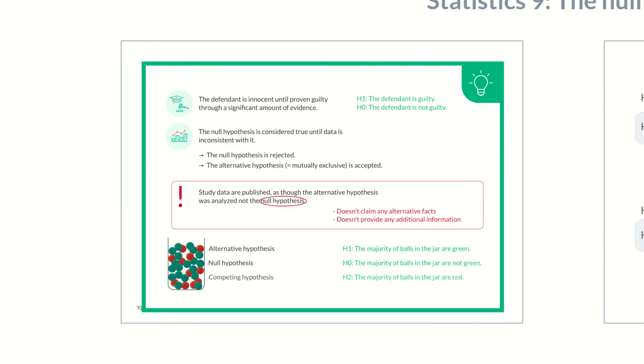The hypothesis, the majority of balls in the jar are red, would be a competing hypothesis, abbreviated as H2.